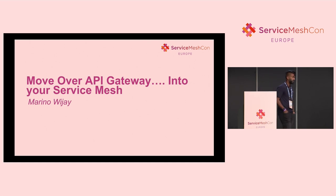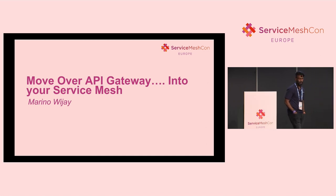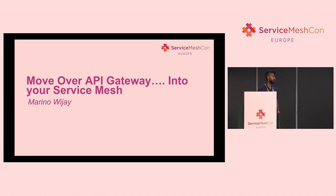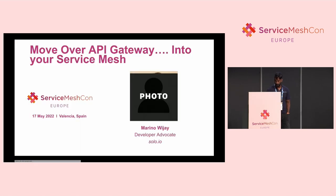I'm here to talk to you about moving over API gateway into your service mesh. What this talk is really about is working to consolidate your API gateway and your service mesh into one system, so you're not having to manage separate resources when you're running a Kubernetes cluster and you have to worry about north-south traffic or east-west traffic.